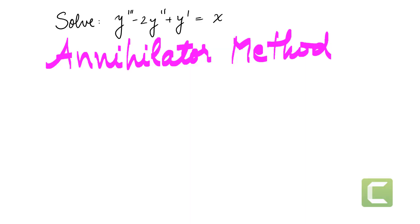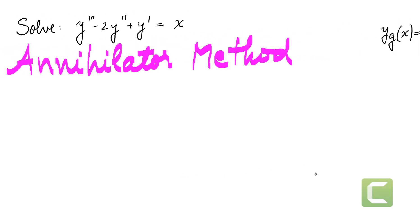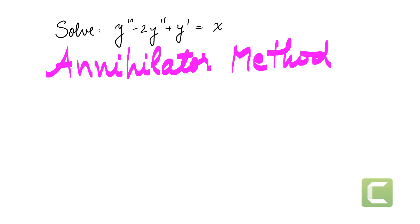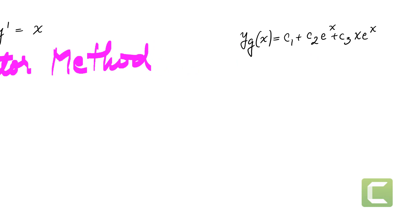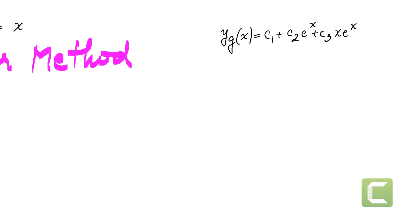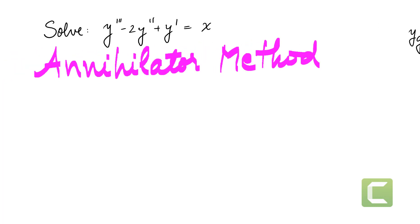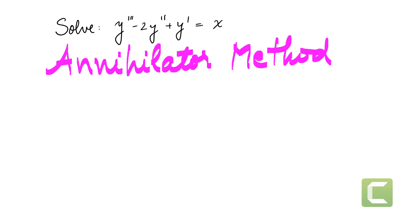Let's solve the equation y triple prime minus 2y double prime plus y prime equals x using the annihilator method. In the previous video we solved the same equation using undetermined coefficients and found our solution. We also solved the homogeneous equation y triple prime minus 2y double prime plus y prime equals zero, finding the general solution c1 plus c2 e to the x plus c3 x e to the x. Now let's use the annihilator method to solve our equation.